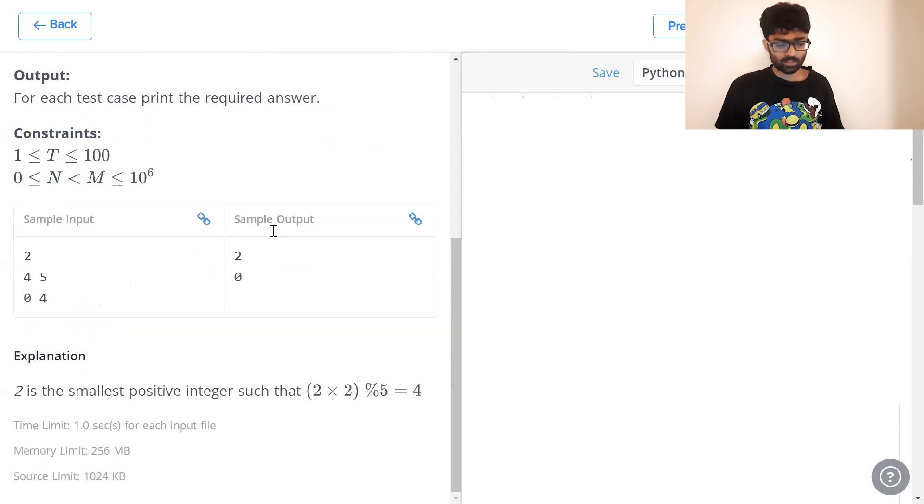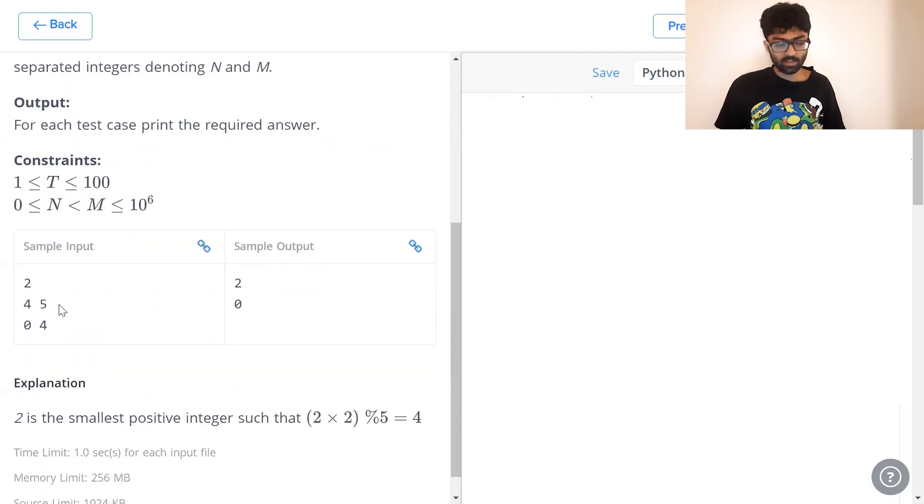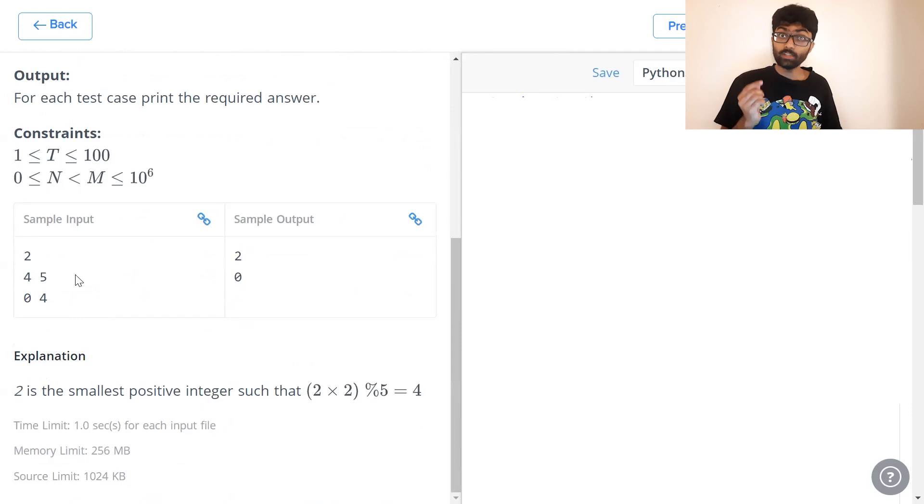Now, this is a pretty straightforward question. Let's say N is 4 and M is 5. So, which value when squared and moduloed by 5 gives us 4? That's naturally 2. 2 square is 4. 4 mod 5 is 4.